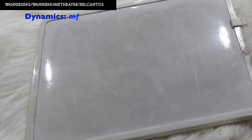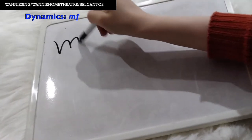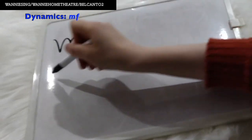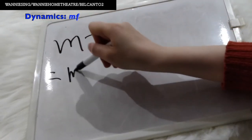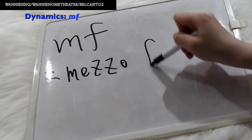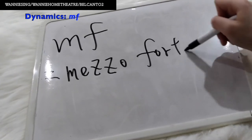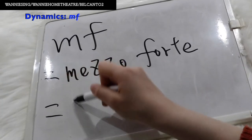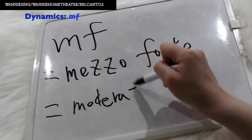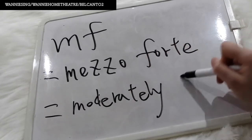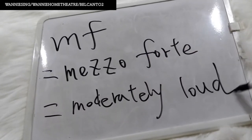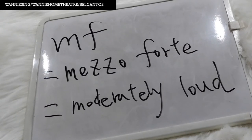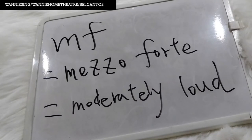Now let's move on to the music dynamics. This time we are going to learn Mezzo Forte. MF stands for Mezzo Forte. Mezzo Forte means moderately loud. Remember we learned F before in the previous lesson? F stands for Forte. Forte is louder than Mezzo Forte. We also learned P. P stands for Piano. Piano is softer than Mezzo Forte.